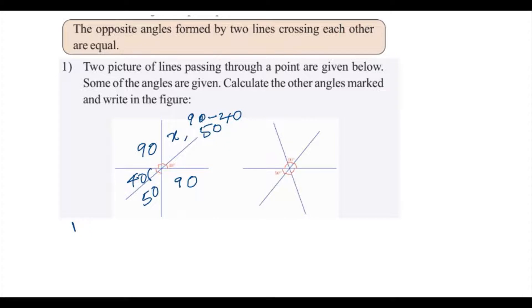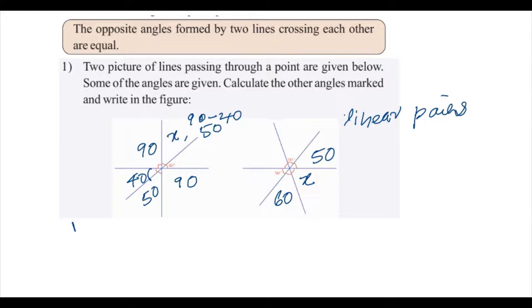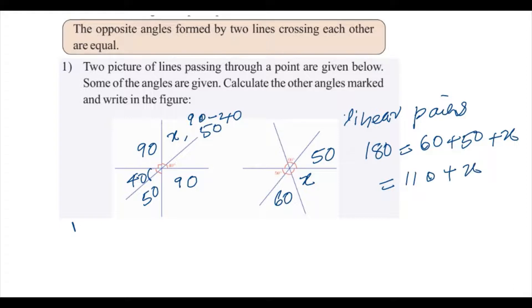Again this angle is 50 degrees — the reason is opposite angle. Now the next question: we can use the principle of opposite angles. This angle is 60 degrees, so the opposite angle is also 60 degrees. This is 50 degrees and the opposite is again 50 degrees. We need to find angle x using the principle of linear pairs. That is: 180 equals 60 plus 50 plus x, so 110 plus x, giving x equals 180 minus 110, which is 70 degrees.